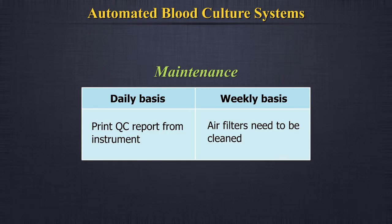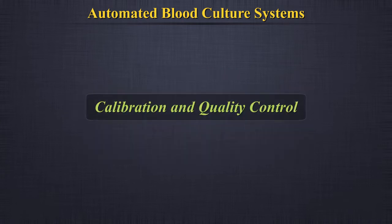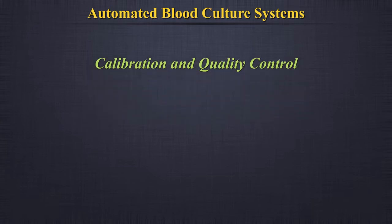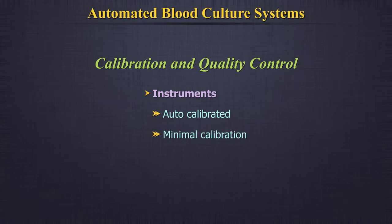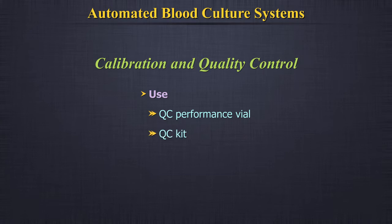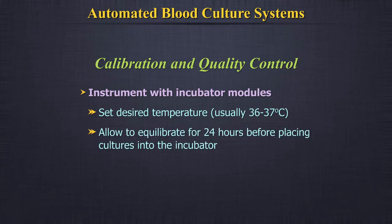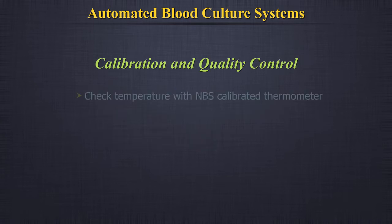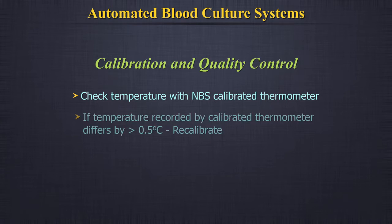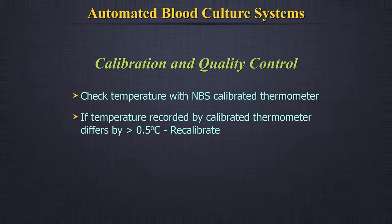Daily or weekly maintenance: on a daily basis, it is required to print the quality control report from the instrument, and on a weekly basis, air filters need to be cleaned. Calibration and quality control: the manufacturer will provide a service representative to perform initial installation and calibration of the instrument. Instruments are either auto-calibrated or require minimal calibration by the user. Use quality control performance vials or quality control kits to calibrate instrument detection systems as recommended by the manufacturer. For instruments with incubator modules, set the desired temperature and allow it to equilibrate for 24 hours before placing cultures into the incubator. Check temperature with an NBS-calibrated thermometer; if the temperature recorded differs by more than 0.5 degrees centigrade, recalibrate by following instructions in the operator manual.